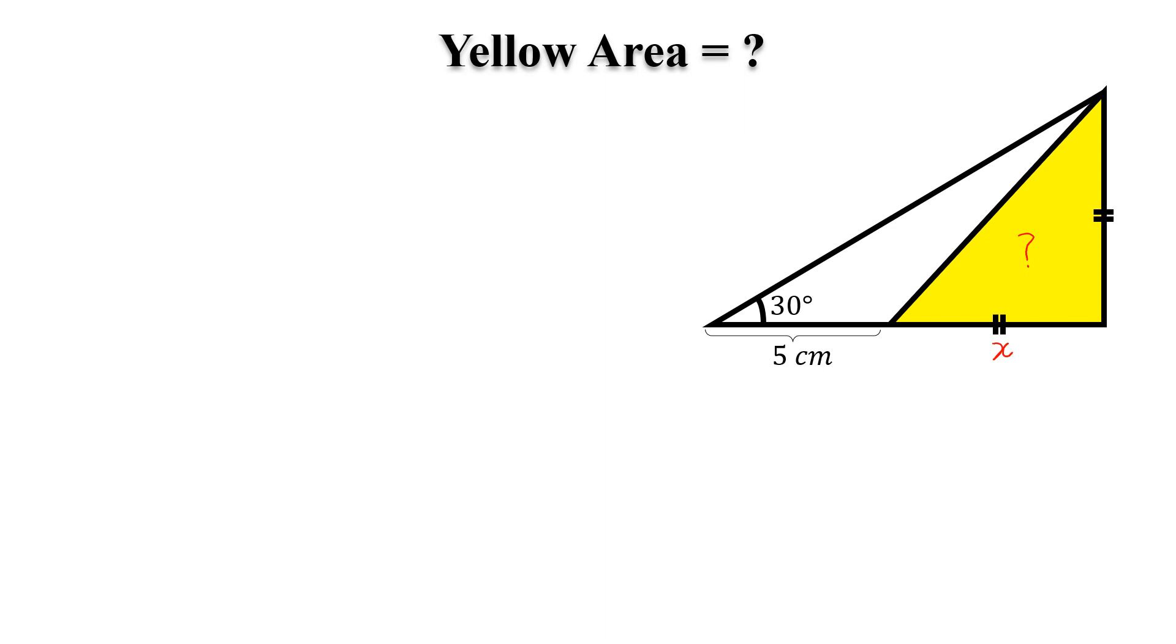Let this length is x, then this length will be also x. Let the hypotenuse of this right triangle is a.